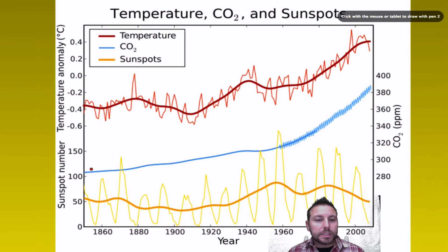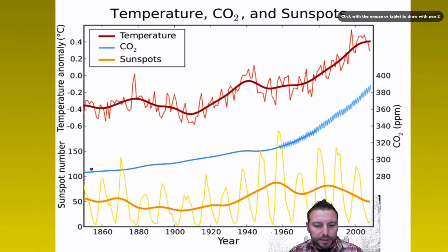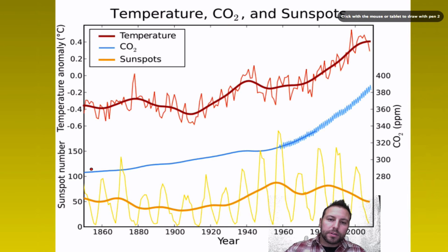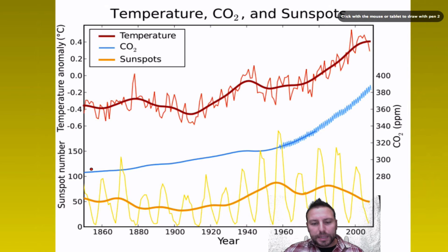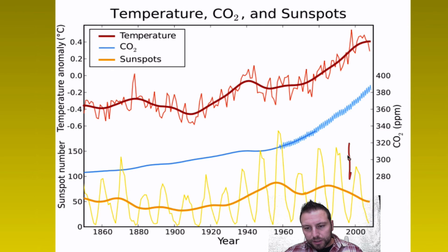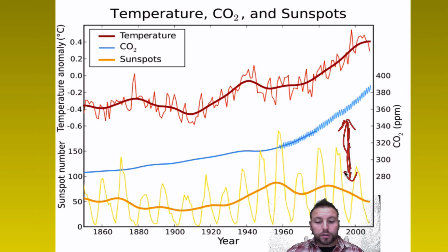Finally, we can look at solar activity. Things have been changing — we know that sunspot activity corresponds to how much solar output there is. What we're starting to notice is that solar output and temperature used to follow each other, but now they're starting to diverge. Our temperatures and solar output aren't necessarily corresponding with each other anymore. It could be a cyclical event, but we're not really sure at this point.